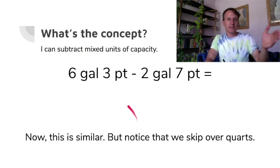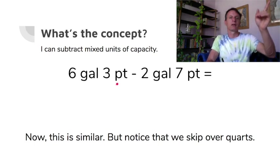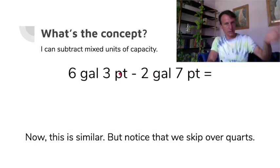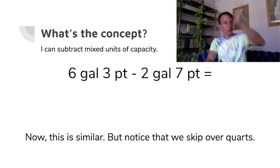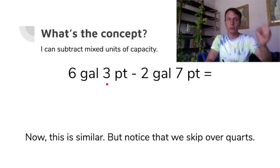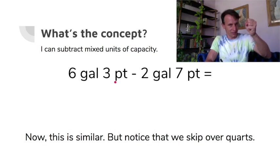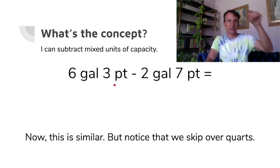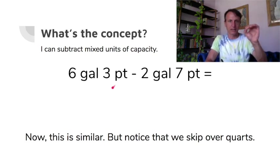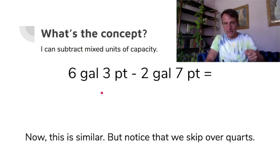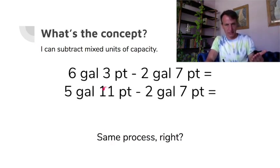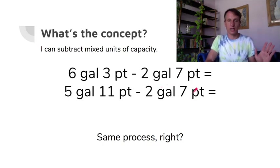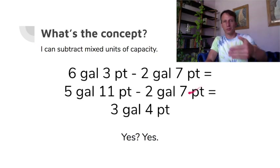The hardest example: seven gallons and three pints minus two gallons and seven pints. We can't do three minus seven, so we regroup. Set aside five gallons, pour the sixth gallon — there are eight pints in a gallon — so eight pints plus the three already there is eleven pints. Now: five gallons and eleven pints minus two gallons and seven pints — straight subtraction — three gallons and four pints.